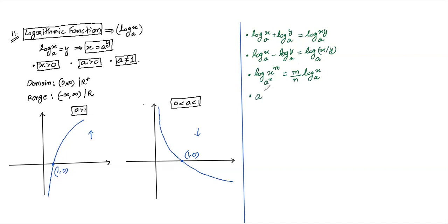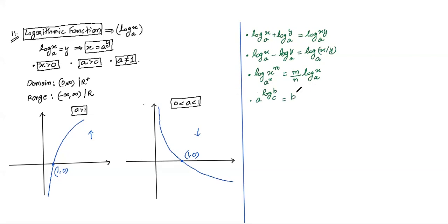Important result: if the number and base are on the same side of unity (1), the log value is positive. Example: log₁₀₀(7) — both 100 and 7 are greater than 1 (same side), so this log is positive. If they're on opposite sides of 1, the value is negative. This helps determine the sign of a log without calculating its exact value.